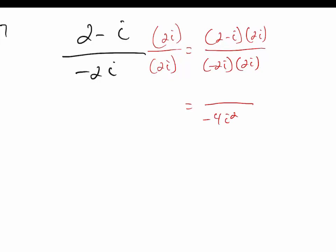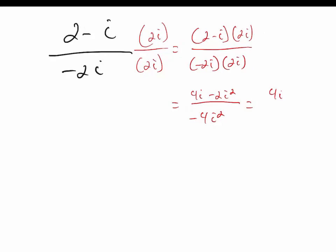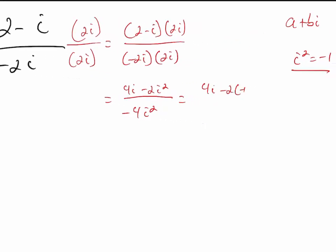For the numerator, using distributive property: 2i times 2 is 4i, and 2i times negative i is negative 2i squared. Rewriting using i squared equals negative 1, we get negative 2 times negative 1 and negative 4 times negative 1. So here we end up with 4i plus 2 over 4.